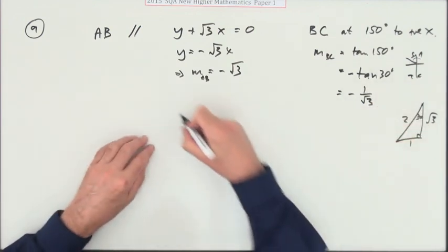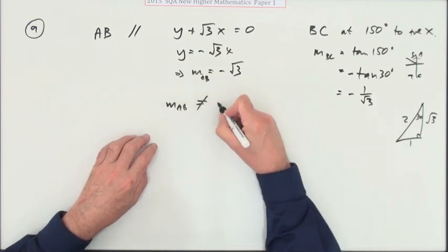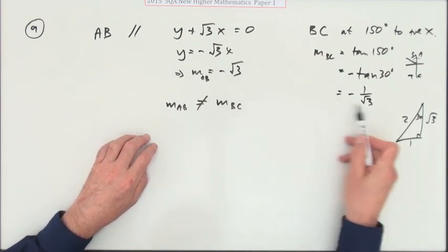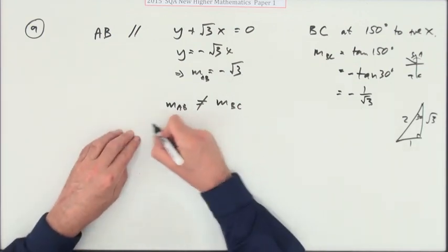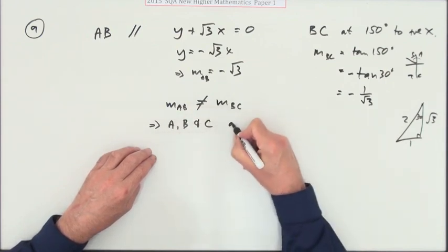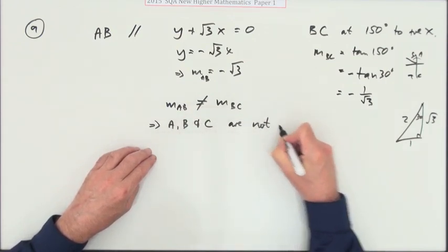And now you make a statement: M_AB is not equal to M_BC. They may well be going down, but they're going down in different directions, which means that A, B, and C are not collinear.